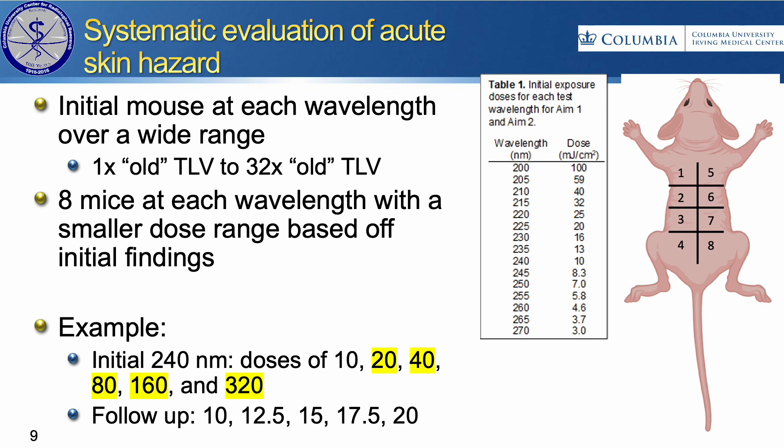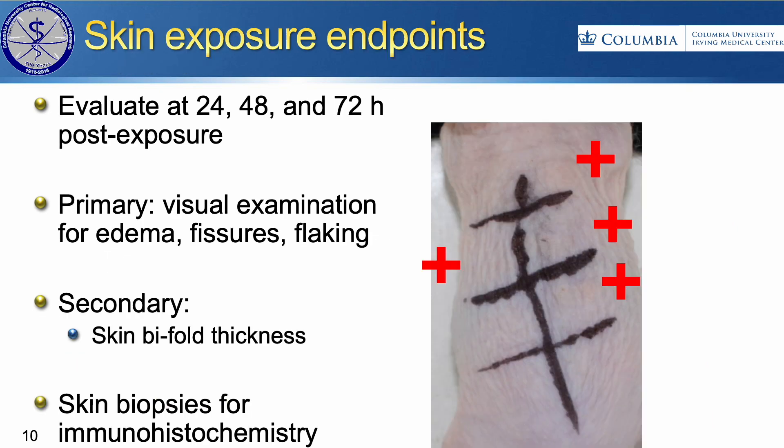We plan to expose an initial mouse, starting with what we'll call the old TLVs — these were pre-2022 — at every wavelength from 200 to 270, using one dose in one section of the back of the mouse, and then two times that, four times that, eight times that, 16 times that, and 32 times that. We'll expose six different sections of the eight marked in a grid on the mouse, plus two controls.